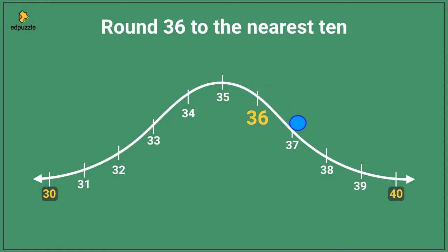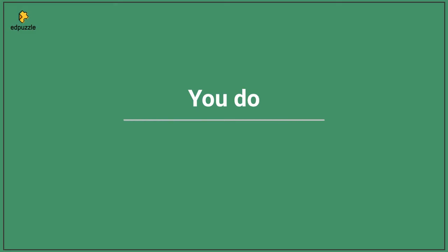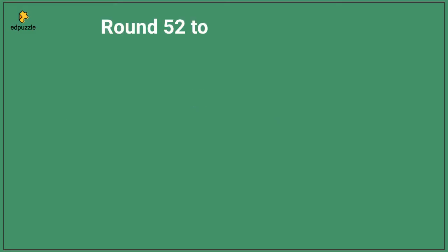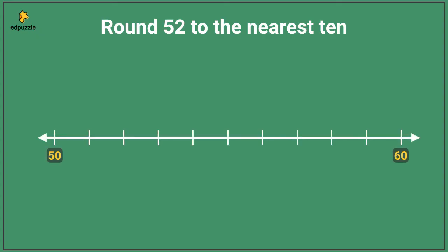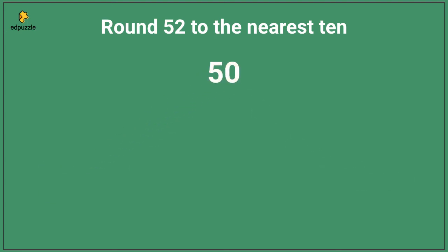You can see that the ball would roll forward to forty. So thirty-six rounded to the nearest ten is forty. Now it's your turn to practice on your own. Round fifty-two to the nearest ten. Remember to imagine a number line and think about which way a ball would roll. Fifty-two is between fifty and sixty, so we imagine those numbers on a number line as a hill. If we put a ball directly at fifty-two, it would roll backwards to fifty. So fifty-two rounded to the nearest ten is fifty.